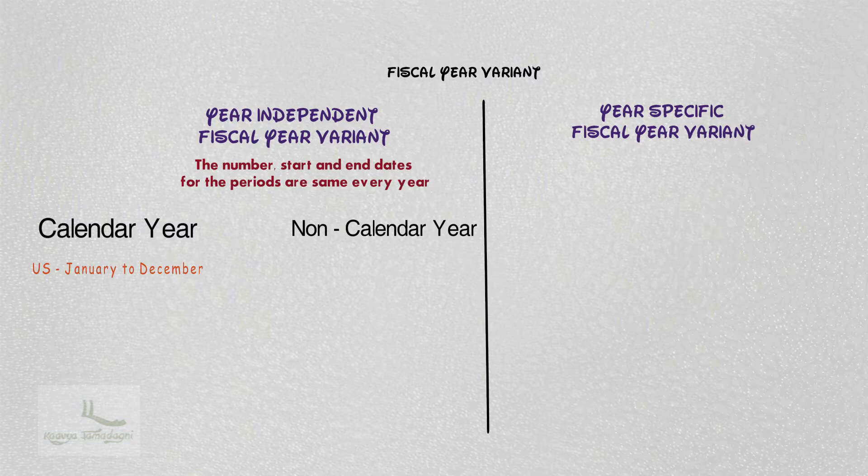For the financial year 2017 for the US, it starts from January 2017 and ends on December 2017. Similarly, for the financial year 2018, it also starts from January and ends on December. Hence the number of periods, start dates and end dates are exactly the same. This was about the calendar year.